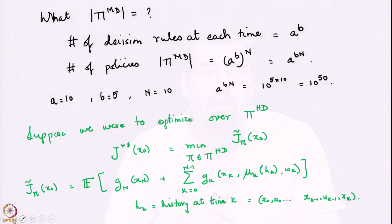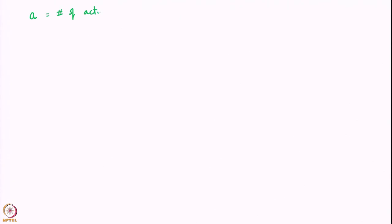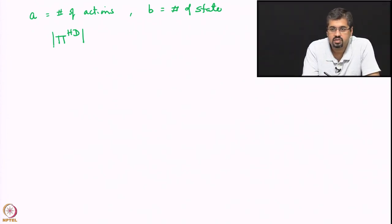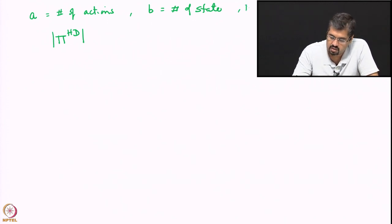Let us think about what kind of complexity this problem amounts to. Suppose we take a simple case - once again a is the number of actions, b is the number of states, and the question is what is the size of Pi_HD. The number of history dependent policies also depends on n, the time horizon.